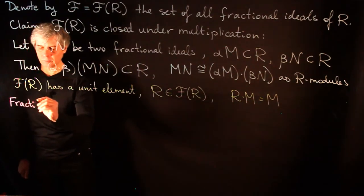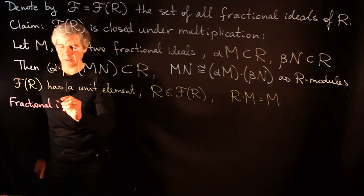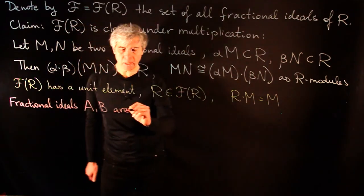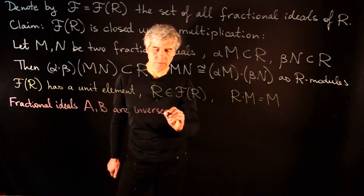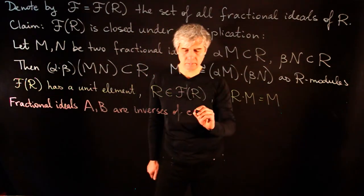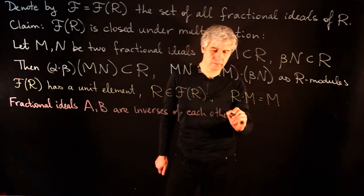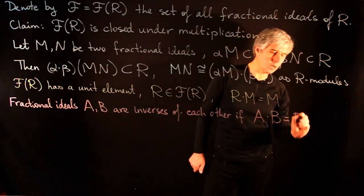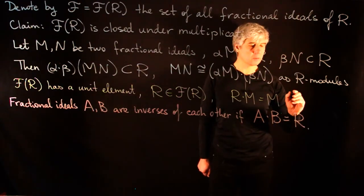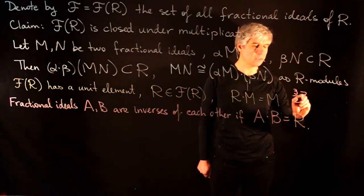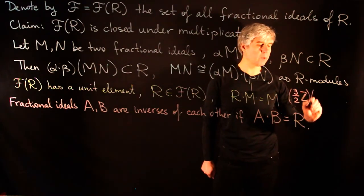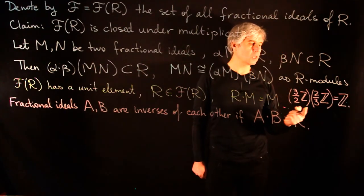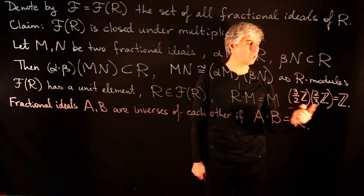As an example, if we have (3/2)Z and multiply it by (2/3)Z, the result is Z. So these two fractional ideals are inverses of each other.